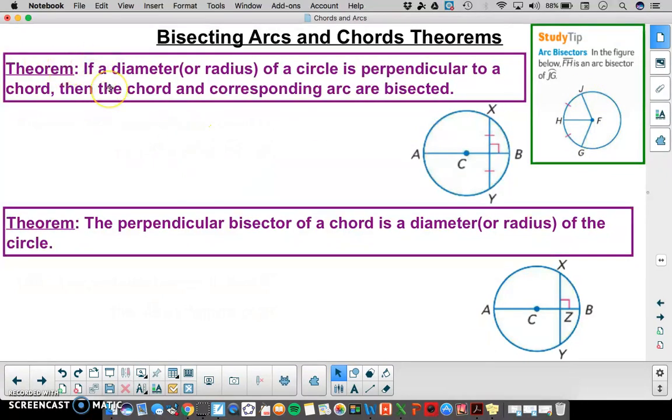With that said, our first theorem is if a diameter or radius of a circle is perpendicular to a chord, then that chord and its corresponding arc are bisected. So in this picture here, we can see diameter AB is perpendicular to chord XY. So this diameter makes a right angle with chord XY.